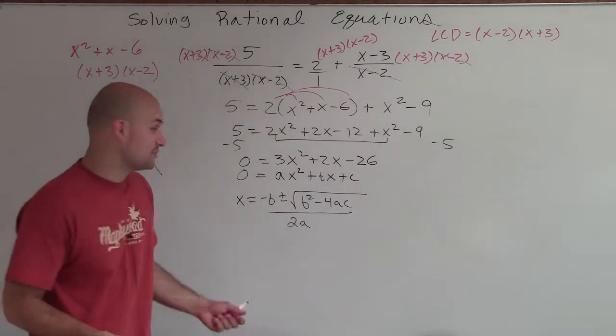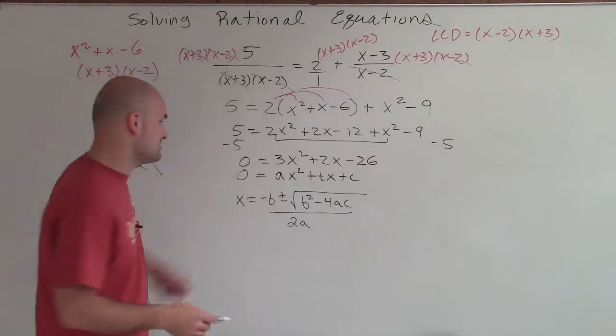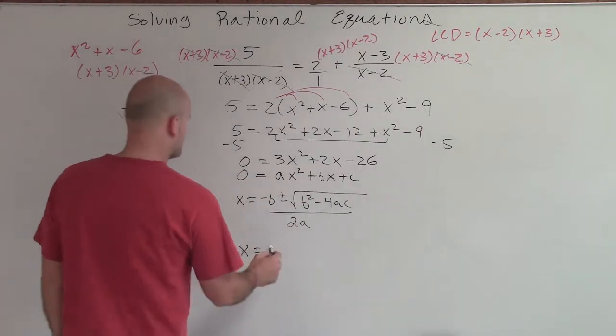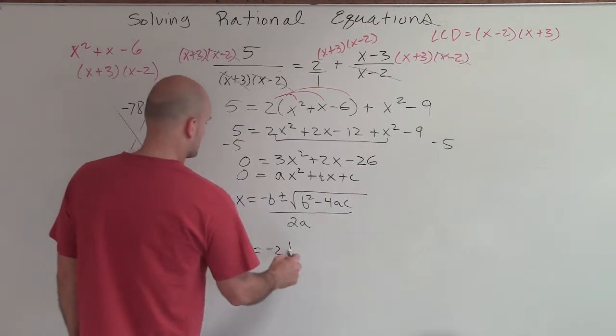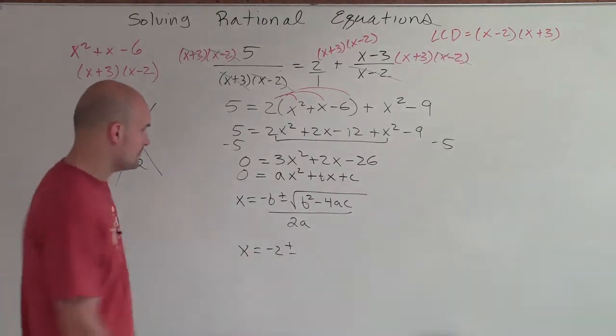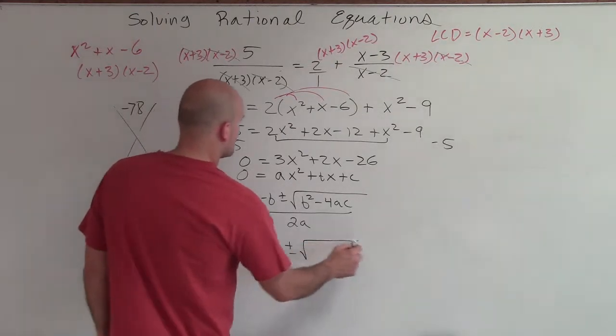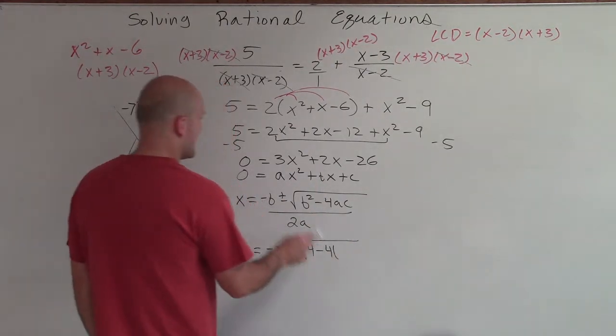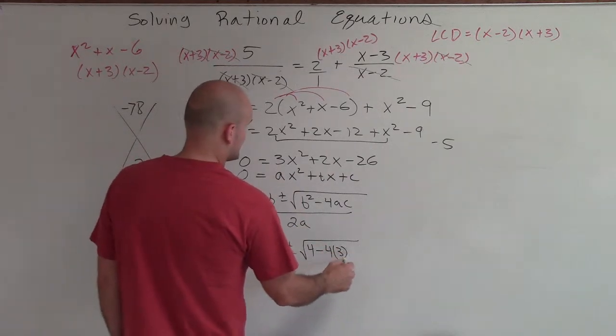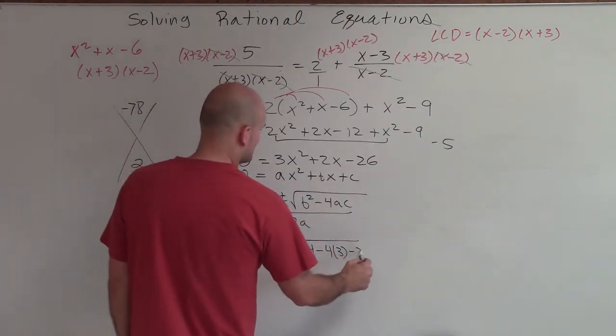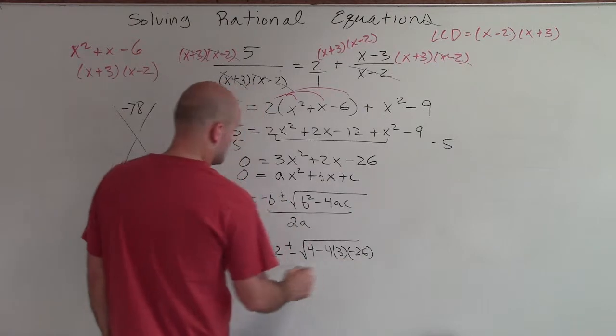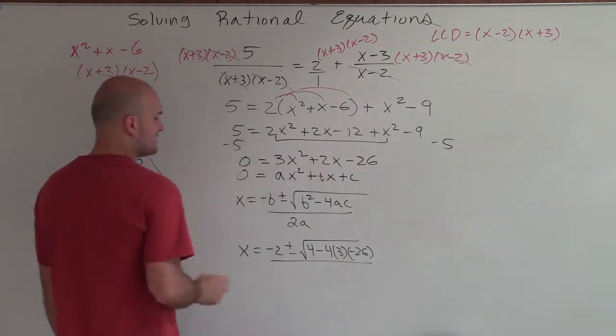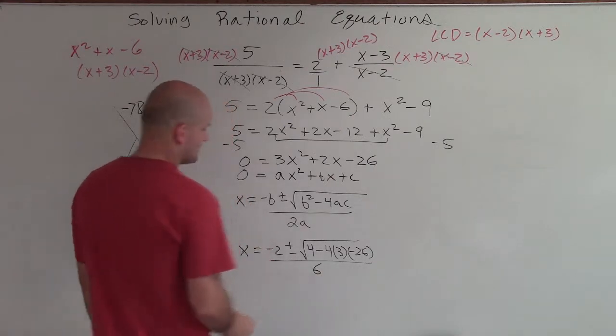So now what I'm simply going to do is just plug in my values and then simplify. So my values of x are going to equal the opposite of b, which is a negative 2, plus or minus. We have the square root of b squared, which is 4, minus 4 times a, which is 3, times c, which is a negative 26, all divided by 2 times a, which a is my 3. So therefore, it's going to leave me with a 6.